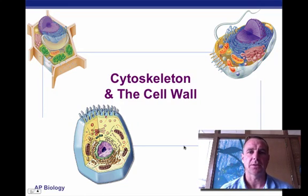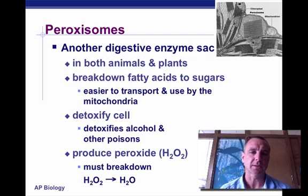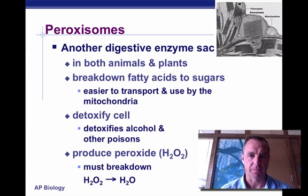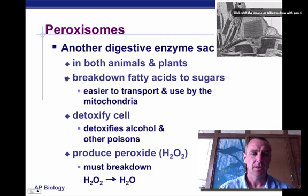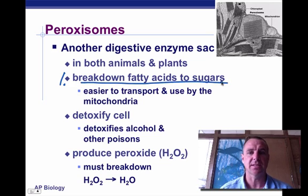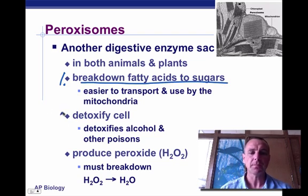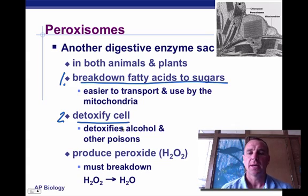Hey guys, I'm back with the cytoskeleton and the cell wall. Before I get started, I forgot to mention peroxisomes in the last video, so I just want to mention those. Peroxisomes are another type of digestive enzyme sac, kind of like lysosomes, but they're found in both plants and animals. They do basically two functions: number one, they break down fatty acids into sugars, which makes it easier for the mitochondria to make energy; and number two, they detoxify the cell — they break down alcohol and poisons, kind of like the smooth ER helps in detoxification.